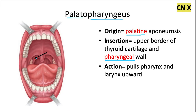This muscle, pointed to here, is located just behind the palatine tonsil, and it forms the palatopharyngeal arch, which is the posterior pillar of the fauces — just posterior to the palatine tonsil and marking the beginning of the pharynx. The last video covered the palatoglossus muscle, which was just in front of the palatine tonsil, forming the anterior pillar of the fauces.